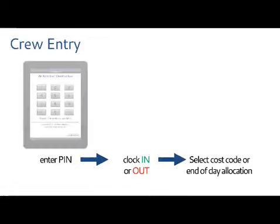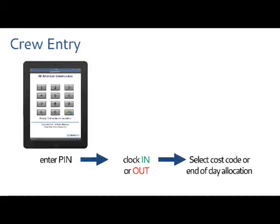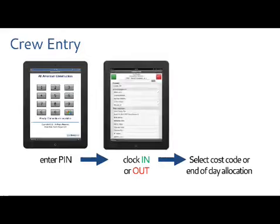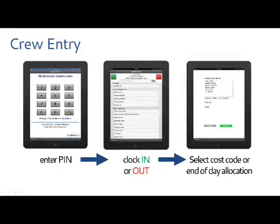Many of our customers have a crew leader do clock-in rather than individual employees. The crew leader puts in their PIN code and sees a list of their employees — their regular crew appears at the top, already checked off. They just hit the in button and get those guys off to work. You can choose a cost code in real time or do end-of-day allocation. About Time has a very simple way to take a start and stop time, break it down to as many cost codes as applicable, and then add that allocation to any other employees or group of employees.